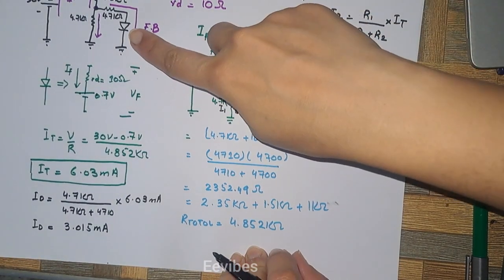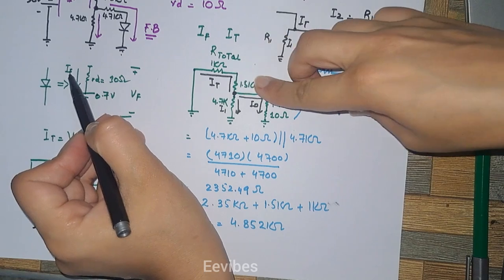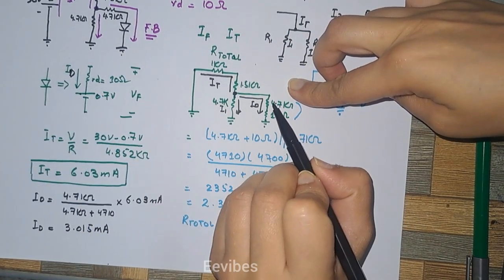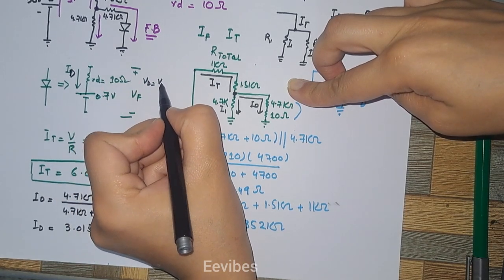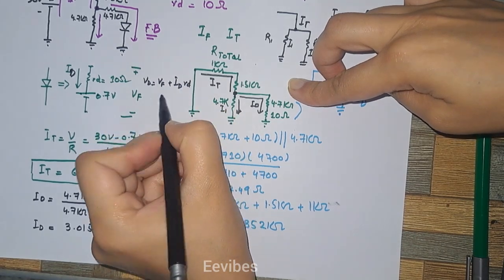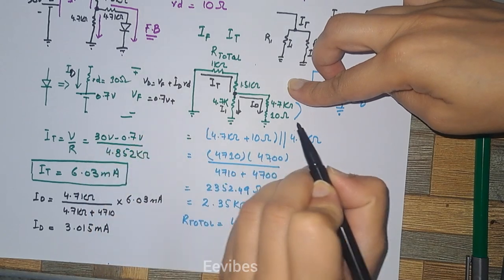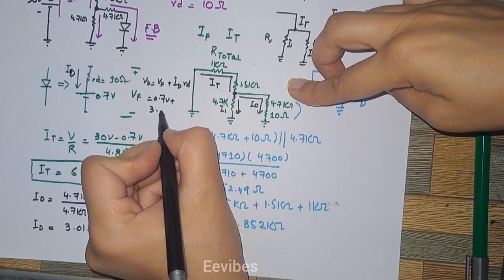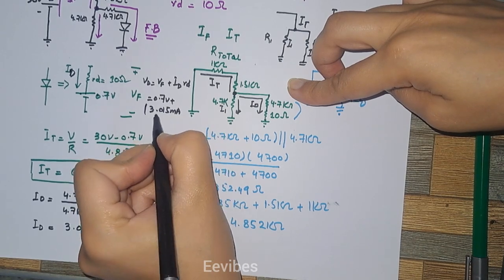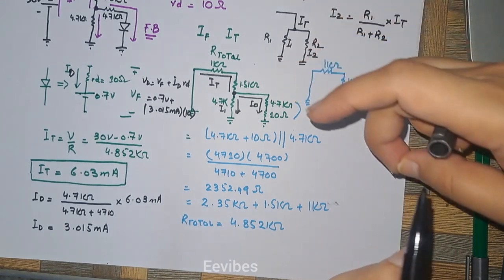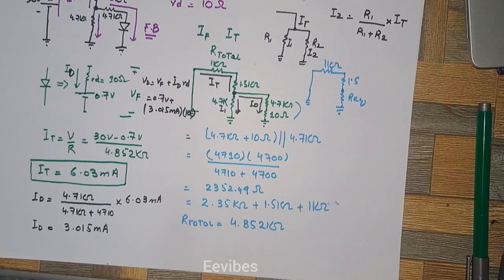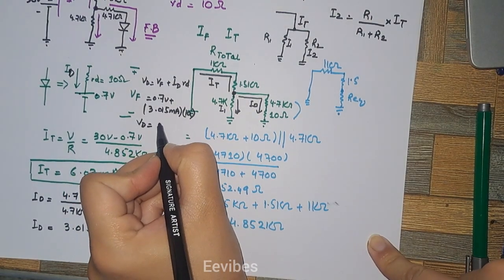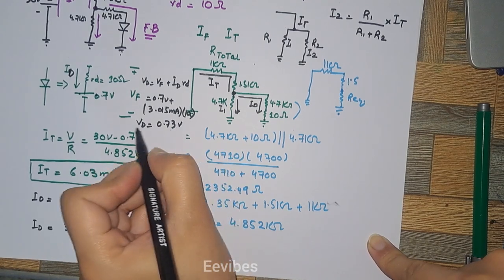The last step is to find the voltage across the diode. VD equals VF plus id times rd, which is 0.7 volts plus 3.015 mA times 10 ohms. Multiplying 3.015 mA by 10 Ω and adding 0.7 volts gives a diode voltage of 0.73 volts.